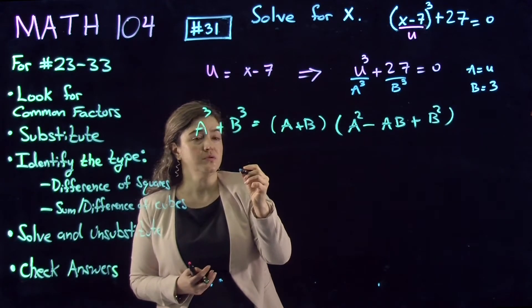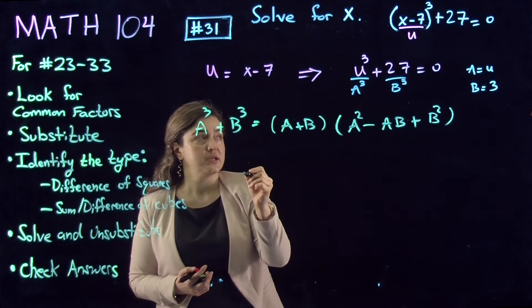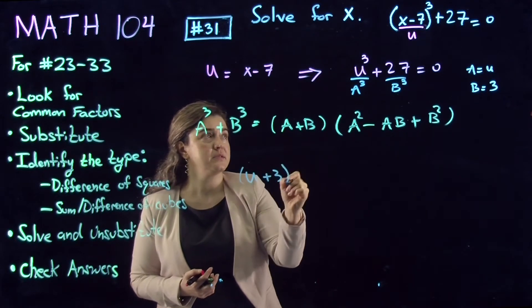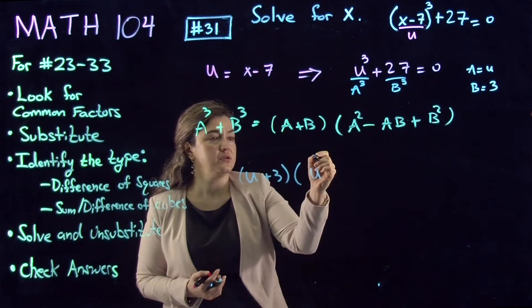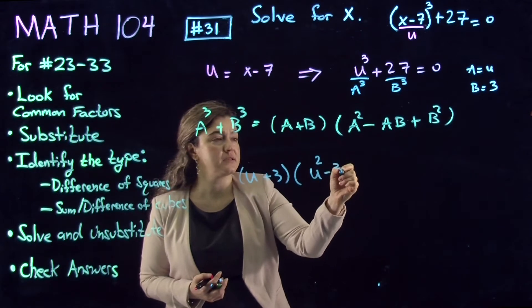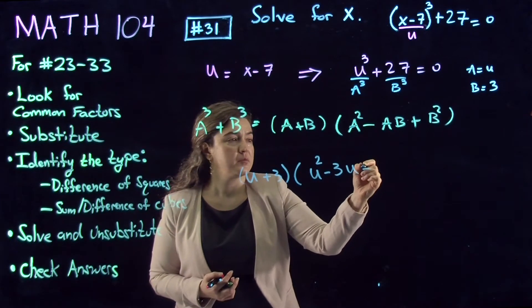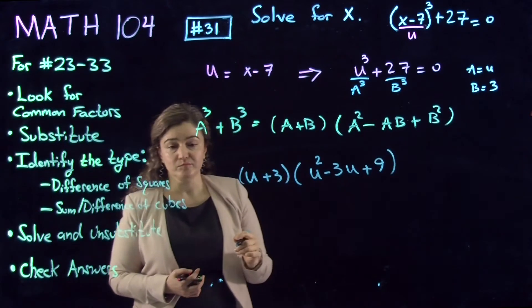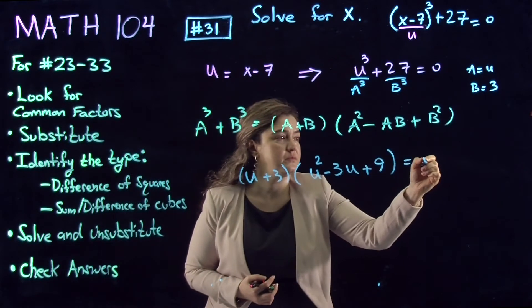Now let's factor the entire expression. So (u+3)(u²-3u+9) = 0.